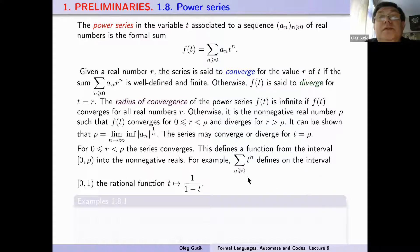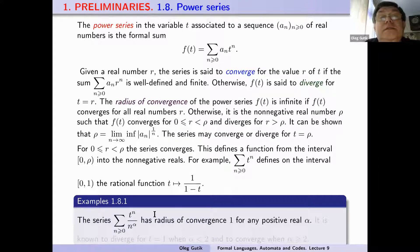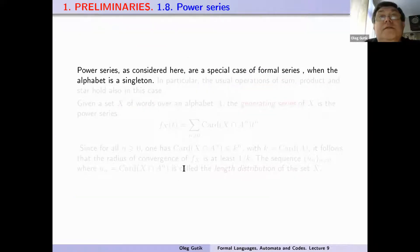For example, the series t^n for non-negative integer n defines on the interval [0, 1) the rational function which maps t to the value 1/(1-t). The series t^n / n^alpha has radius of convergence 1 for any positive real number alpha. It is known that it diverges for t equal 1 when alpha is less than or equal to 1, and converges when alpha is greater than 1.